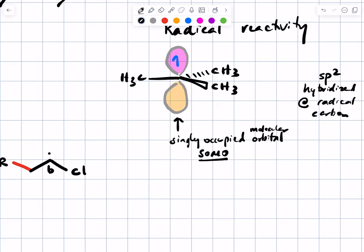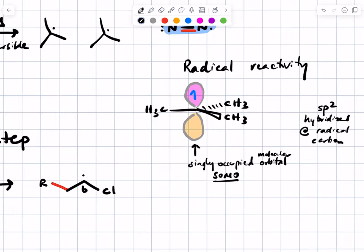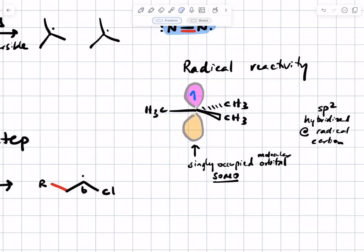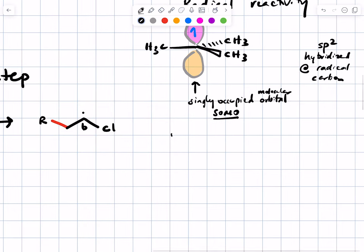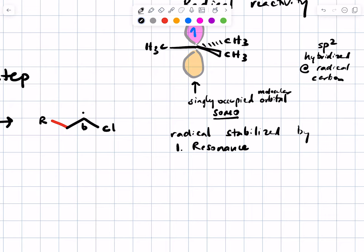You'll hear radical chemists talk about that kind of thing. The same things that stabilize charges also stabilize radicals. So radicals are stabilized by resonance — resonance delocalization. They can also be stabilized by hyperconjugation.